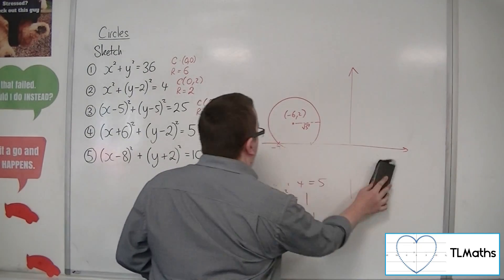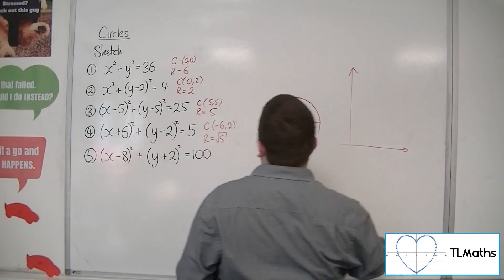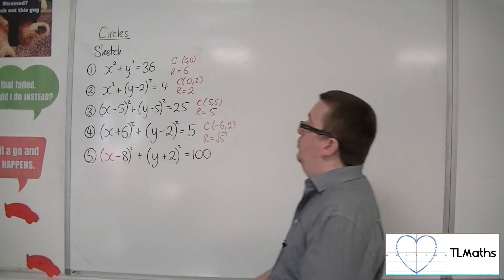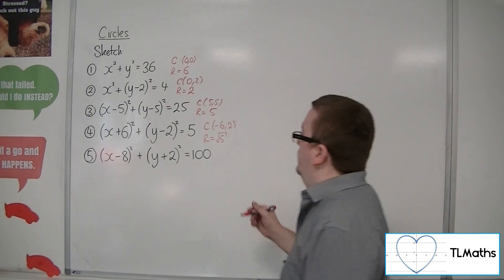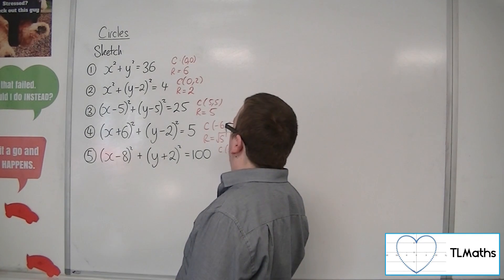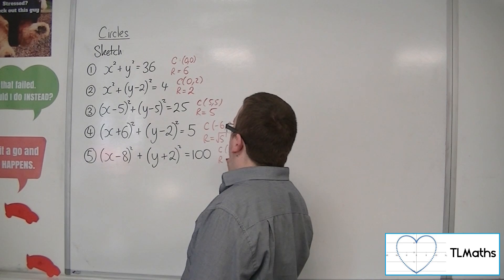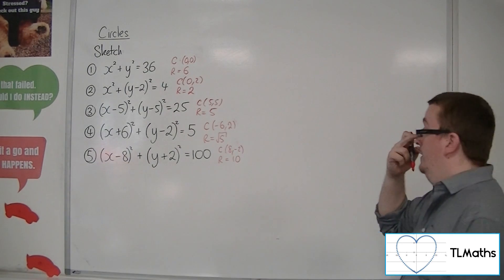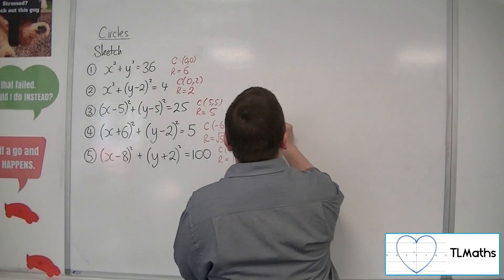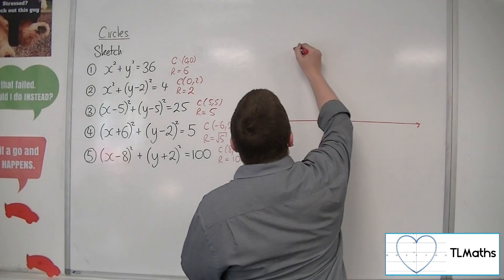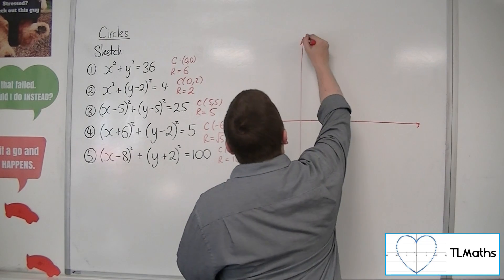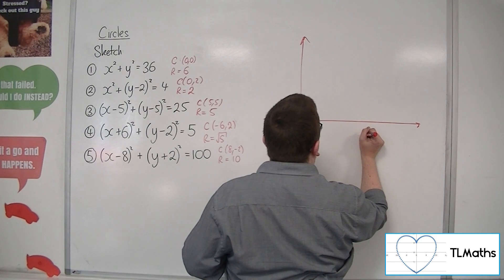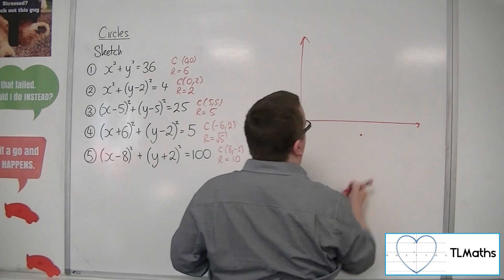So finally, we have number 5. We've got x minus 8 squared plus y plus 2 squared equals 100. So, this is a circle centred at 8 minus 2 with a radius of 10. So, 8 minus 2. So, 8 minus 2. Probably going to be something like down here.